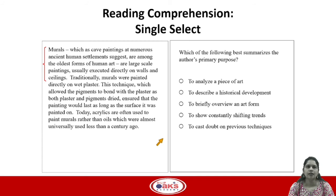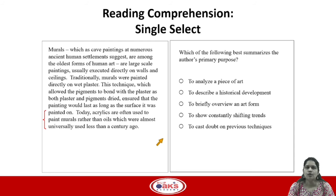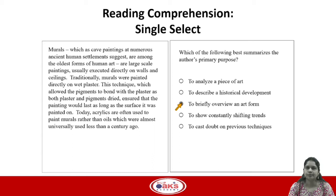If you look at the passage, the first part talks about murals, the next part describes them traditionally, and the last part talks about how they are today — noting that acrylics are often used to paint murals rather than oils, which were almost universally used less than a century ago. So it tells us how things have changed. We want the author's primary purpose — the reason for writing the passage. Option C says it is an art form and gives a brief overview, which is true. So C is the correct answer choice.